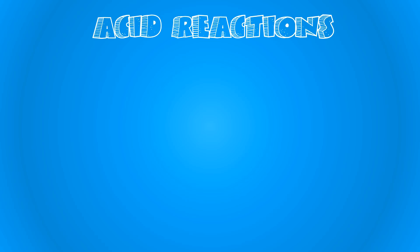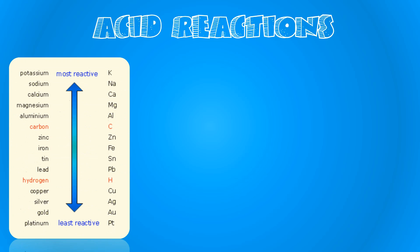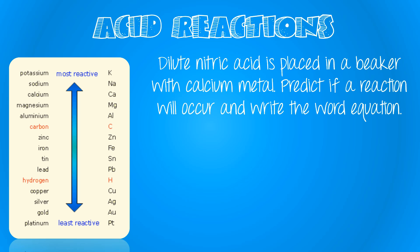Let's now have a look at a specific example. Use this reactivity series to predict if a reaction would occur between nitric acid and calcium metal — pause the video and have a go. Hopefully what you saw is that calcium is above hydrogen, which represents the acid, and because calcium is above it we know that a reaction will occur.